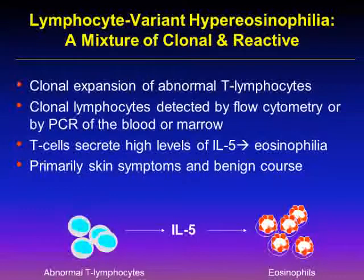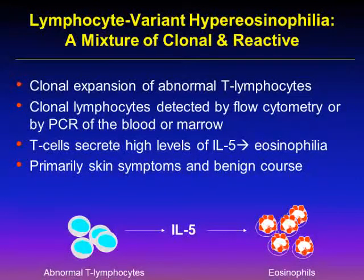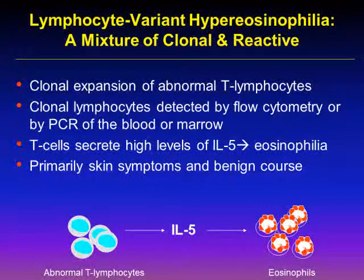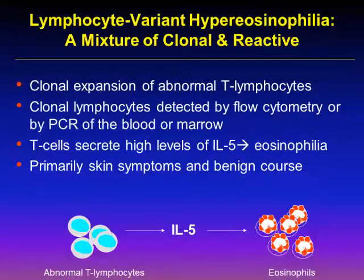The next slide refers to another, albeit uncommon, cause of an elevated eosinophilia which we refer to as lymphocyte variant hypereosinophilia. In the healthy state, the cytokines GM-CSF, interleukin-3, and most notably interleukin-5 direct the proliferation, survival, and differentiation of eosinophils. IL-5 in particular is a very specific eosinophil differentiation factor overproduced primarily from CD4-positive T lymphocytes as part of the immune response leading to hypereosinophilia observed in parasitic infection and atopy or allergic disorders.